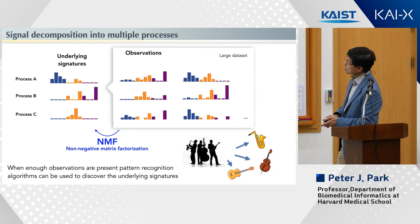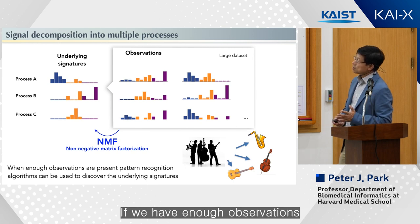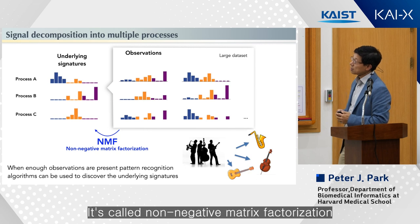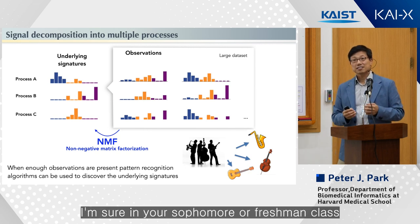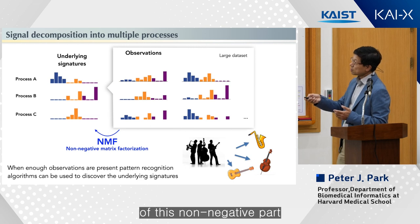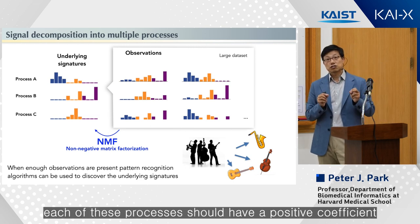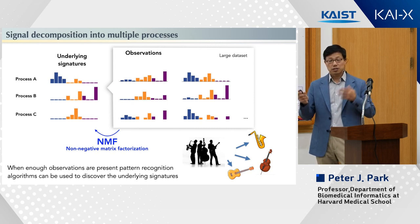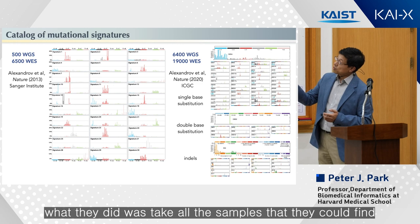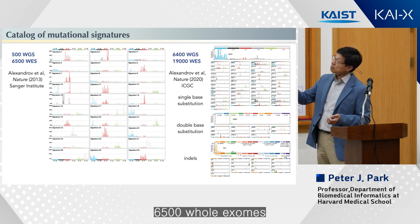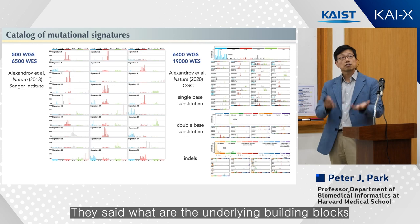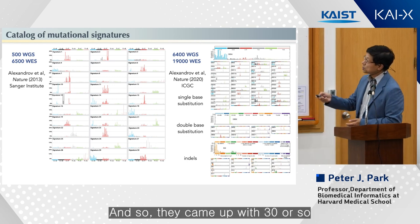If we have enough observations, we can use pattern recognition algorithms to discover the signatures. It's called non-negative matrix factorization. In your sophomore or freshman class you've learned matrix factorization — this looks fancier only because of the non-negative part. It's non-negative because each of these processes should have a positive coefficient. The first paper on this topic took all the samples they could find — 500 whole genomes, 6,500 whole exomes — did this matrix factorization, and asked what are the underlying building blocks that make up the signatures? They came up with 30 or so.